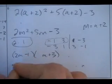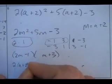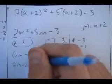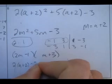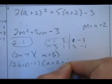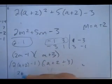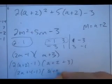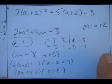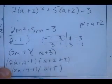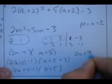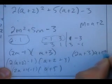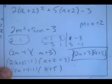Now I substitute back in my A plus 2. 2A plus 2 minus 1. A plus 2 plus 3. I get 2A plus 4 minus 1. What do I get here? A plus 5. Am I done yet? No, just about. It ends up being 2A plus 3 times A plus 5. Isn't that nice?